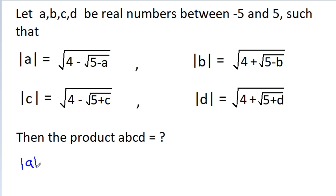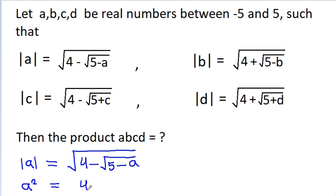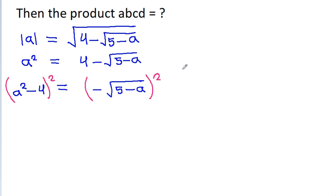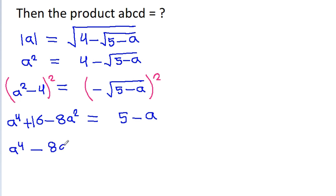We have mod a equals root under (4 minus root(5 minus a)). If we square both sides, we get a² = 4 minus root(5 minus a), so a² minus 4 equals minus root(5 minus a). Squaring both sides again gives a⁴ + 16 minus 8a² equals 5 minus a, or a⁴ minus 8a² plus a plus 11 equals 0. Suppose this is equation 1.